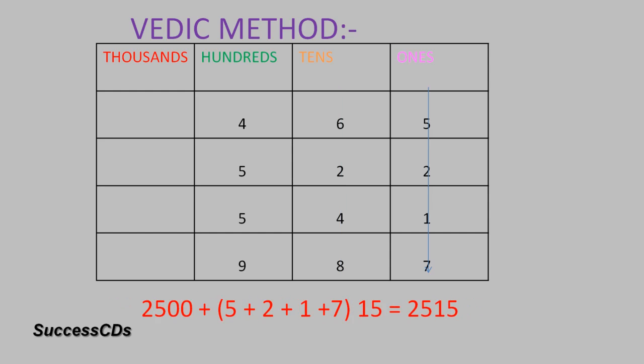And then the next step is you add up the ones place numbers: 5 plus 2 plus 1 plus 7, which gives you 15. Add that to 2500 and you get the answer 2515. So this method is shorter — it takes less time and less paperwork is involved.